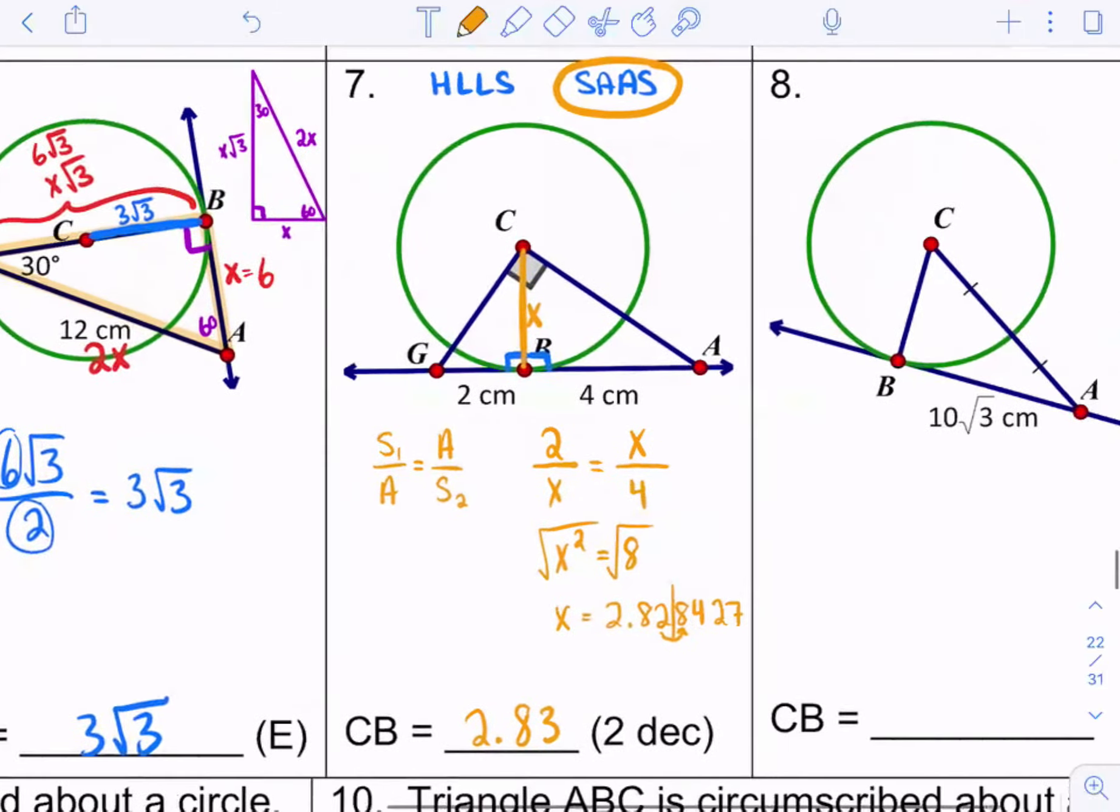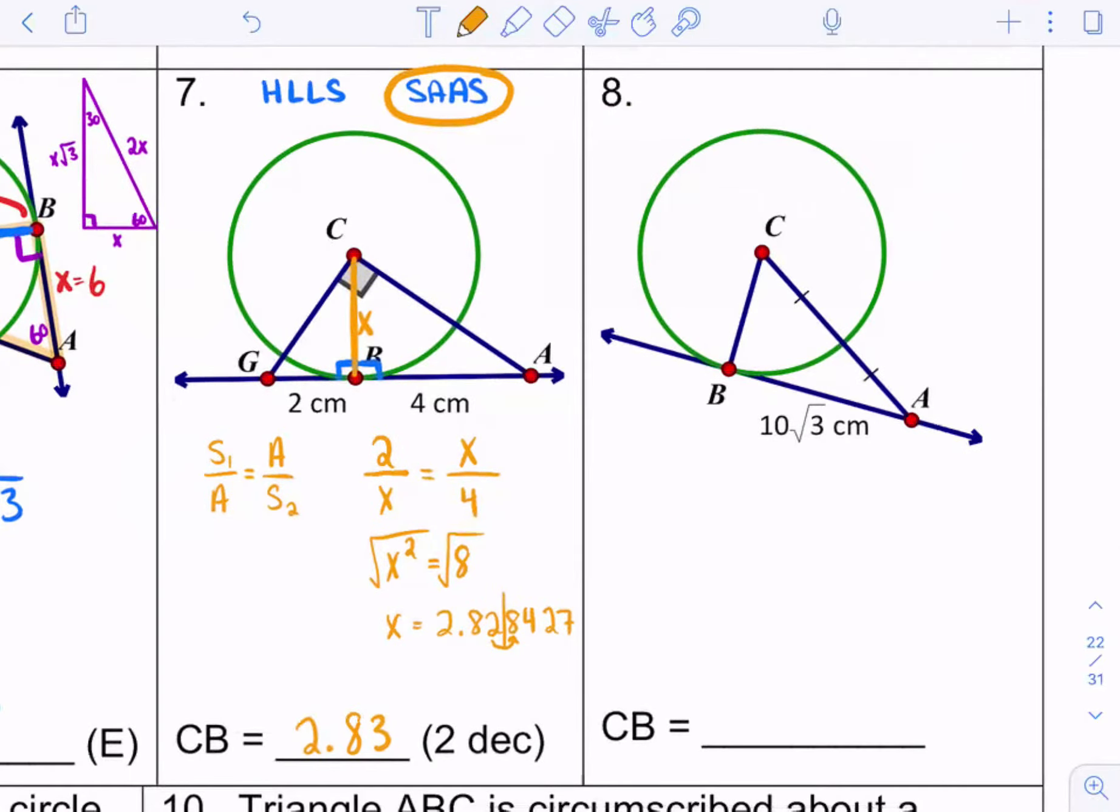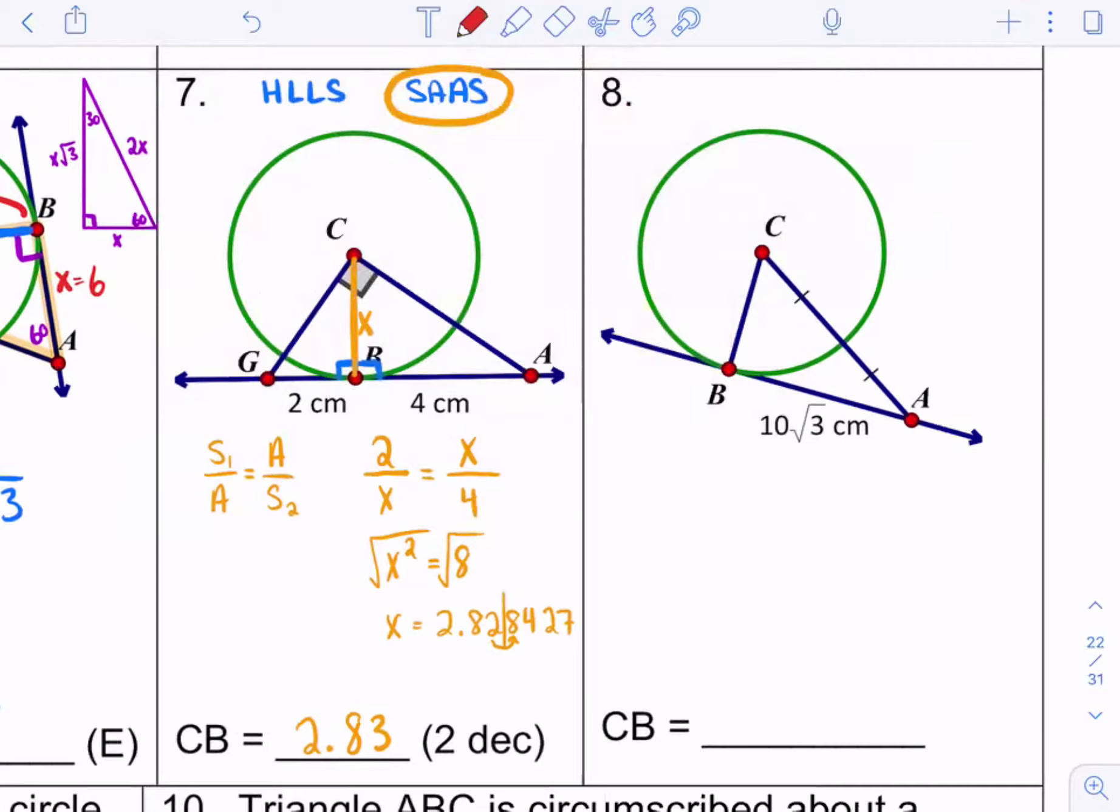Okay. And then number 8. This is interesting. We have to find CB. Now, this is telling us, so see how you're not assuming here, Ms. Murphy? This is telling us that these two are equal. So this got cut in half. So if I labeled them x, what would this whole thing be? 2x. And then since this is a radius and CB is also a radius, I can label it as x. And then I also have a tangent to a radius. So I have a right angle. It's almost like we're co-teachers. We can complete each other's sentences.